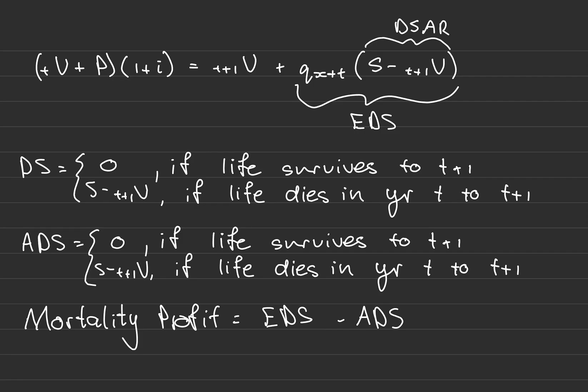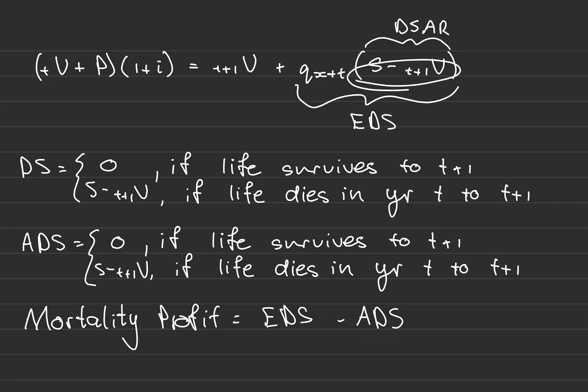Mortality profit is a very helpful exam question because calculating it requires computing the expected and actual death strains, which in turn requires the death strain at risk, which requires the reserve at time t+1, which likely requires calculating premiums first. It can be a lengthy question that tests many concepts, so it's very useful to know how to do mortality profit calculations — it will almost certainly appear in your exam.